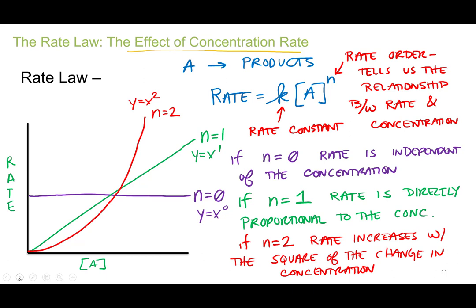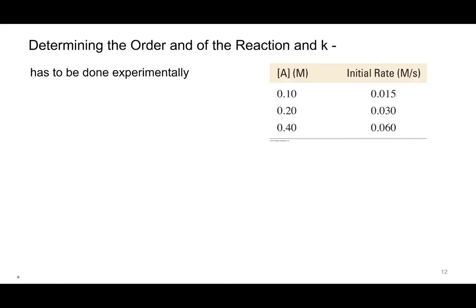The best way is to look at rate as a function of concentration graphically, but you can also determine the rate order by comparing trials experimentally. You can also eventually calculate the rate constant once you know the rate law. So let's say we go into the lab and try to figure out the rate order for reactant A. The rate law is: rate equals k times the concentration of that reactant raised to some power n.